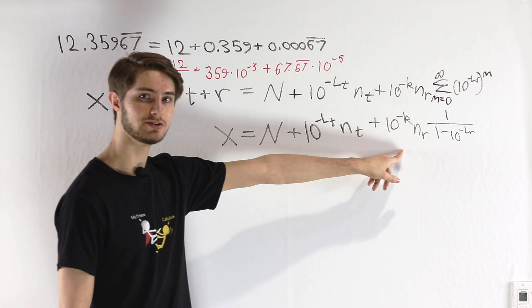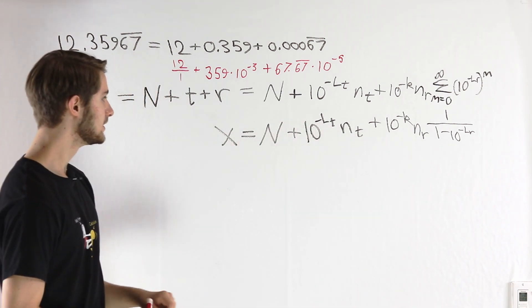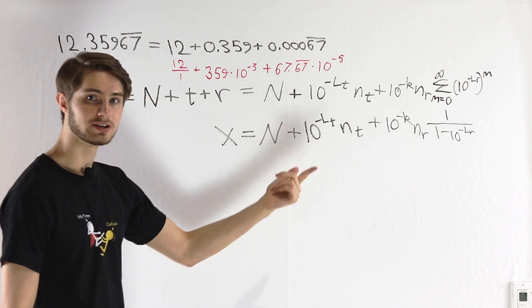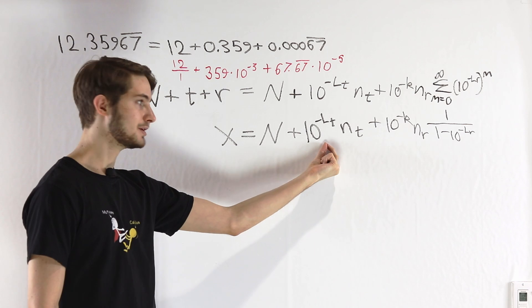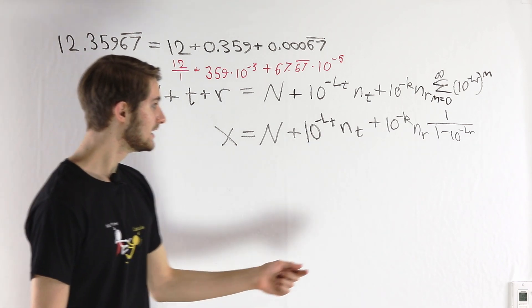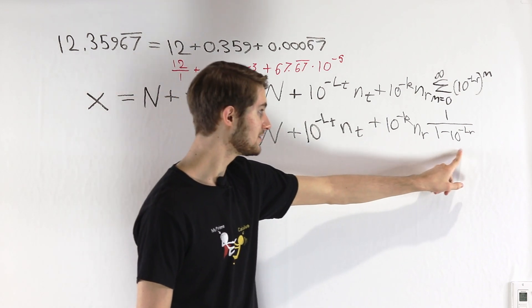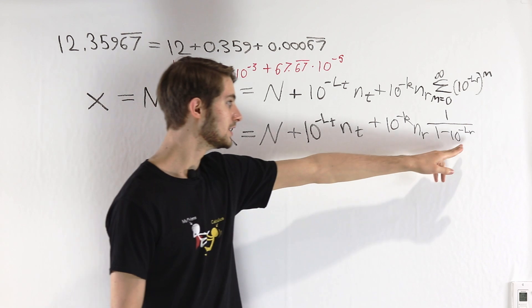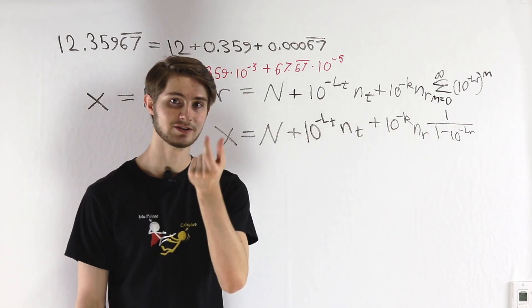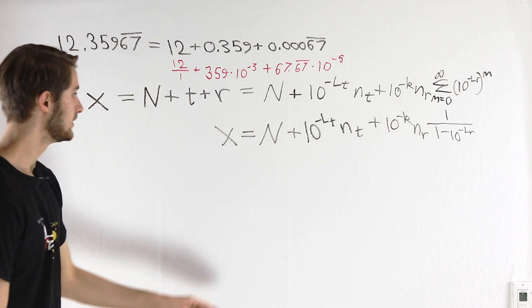Every single variable in this expression here is an integer. And therefore, when we do 10 to the negative some integer, that's going to be rational. When we multiply two rational numbers, that's also rational. And when we divide two rational numbers, as long as the denominator is not 0, and it isn't because we know a repeating decimal must have length of at least 1, this is rational as well.